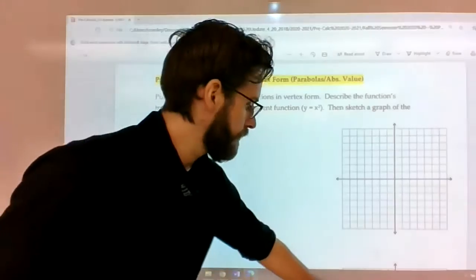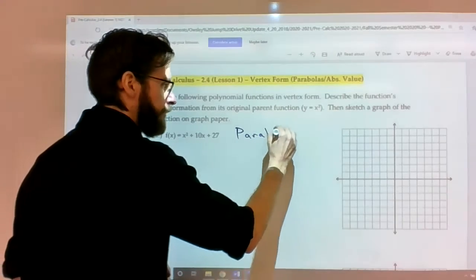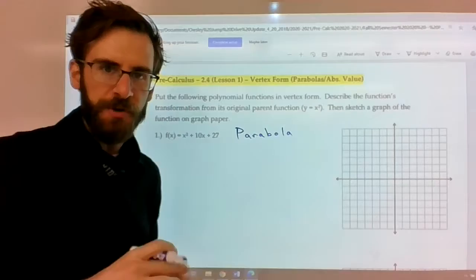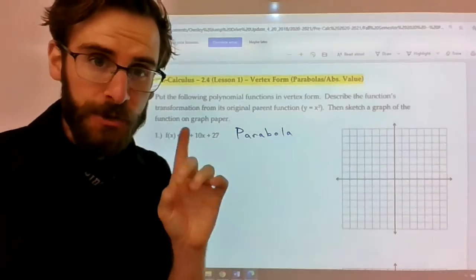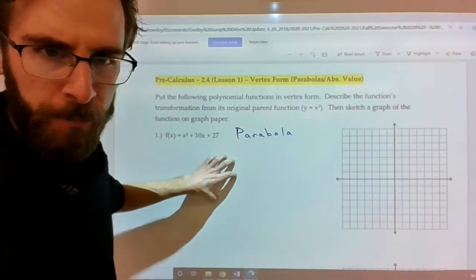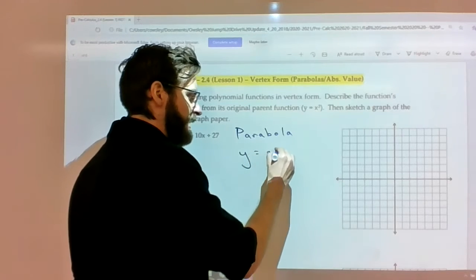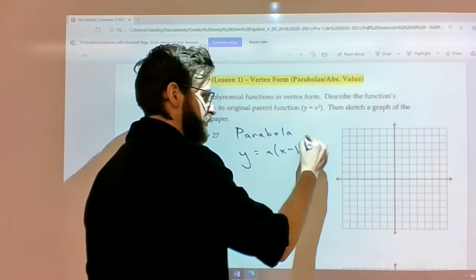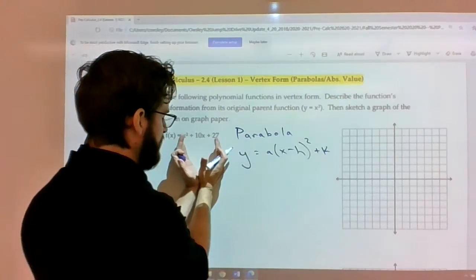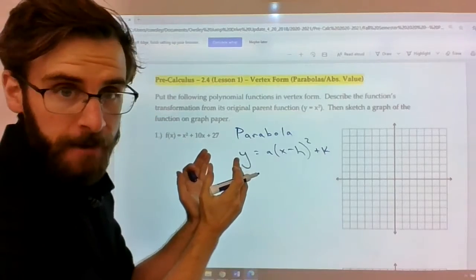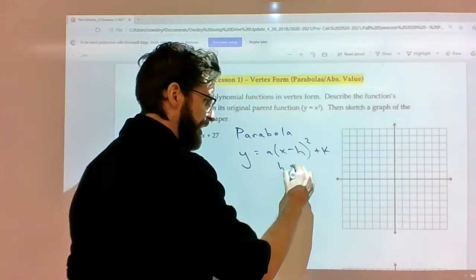So the first thing I'm going to do is talk about this parabola. Now if you recall a parabola were those quadratic functions in which we factored, used the quadratic formula, all that good stuff. And I did allude to the fact that there is kind of like a standard form for parabolas. It's actually called vertex form where it's y equals a times x minus h squared plus k in which hk is either the bottom of the curve or the top of the curve. hk is the vertex.